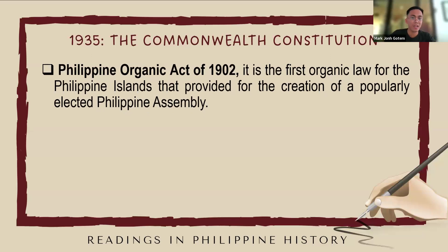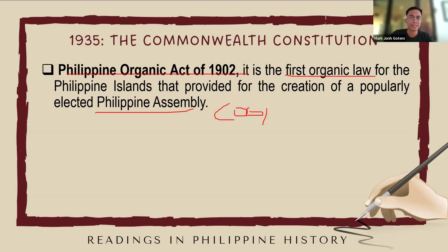The Philippine Organic Act of 1902 is the first organic law for the Philippine Islands that provided for the creation of a popularly elected Philippine Assembly. It was also known as the Cooper Act, named after its sponsor, Senator Henry A. Cooper.